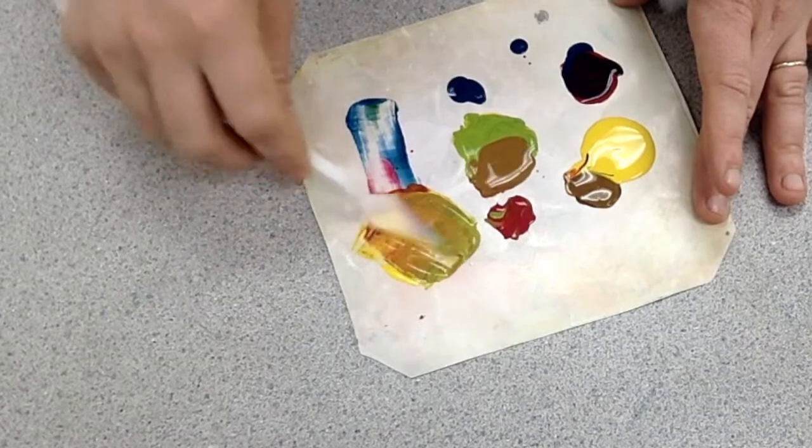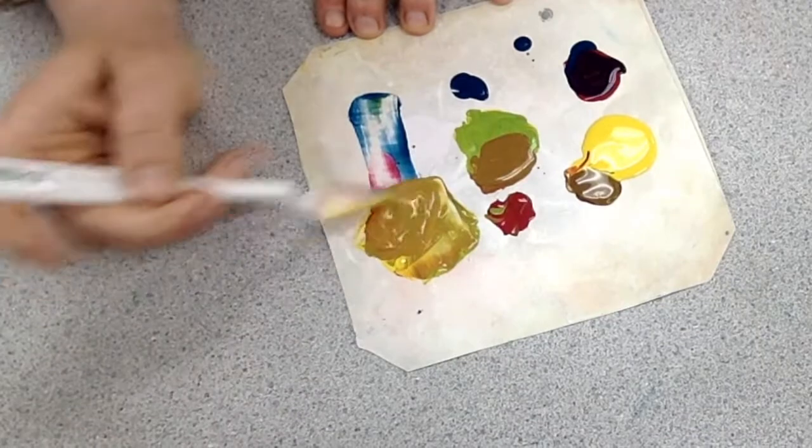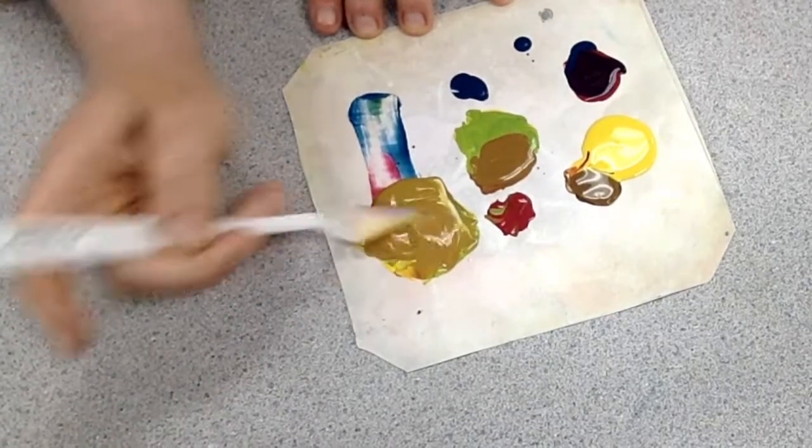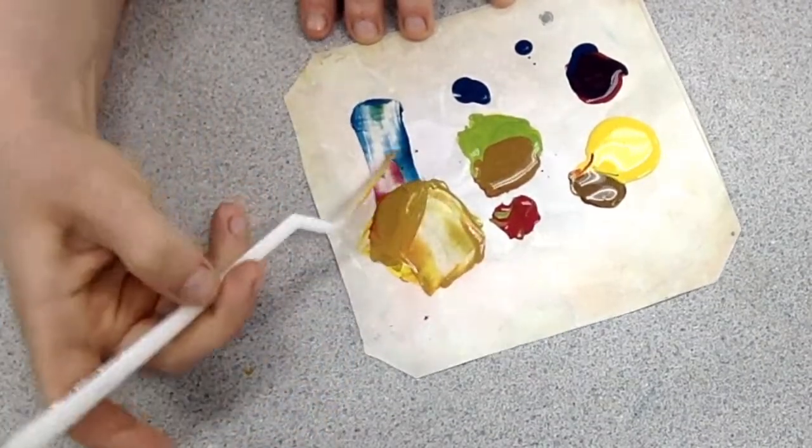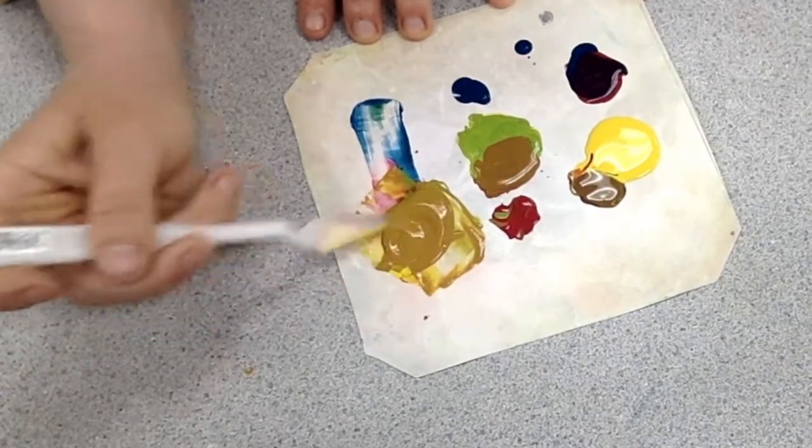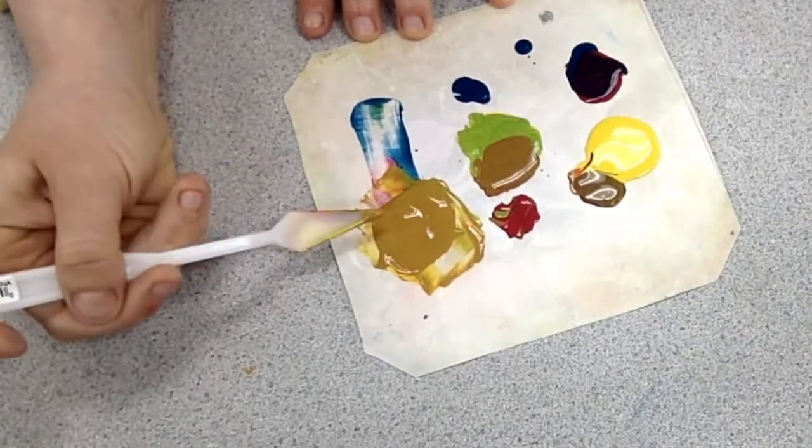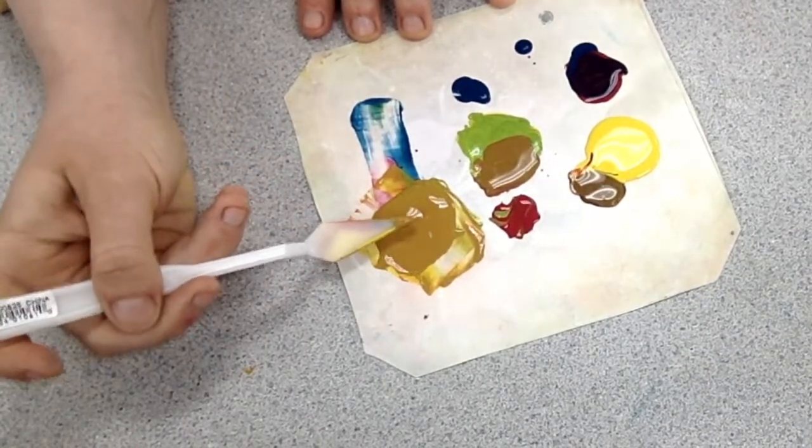When you do this, you can get something that looks close to brown. Do you see how that looks close to brown? But the problem is that because I mixed all of these together, it takes a really experienced eye to look at this and say, oh, that's too orange.